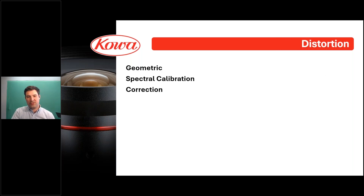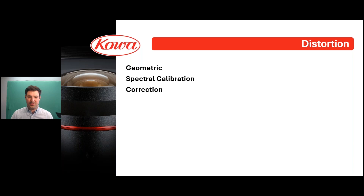There are several types of lens distortion commonly experienced that can affect hyperspectral or multispectral imaging. Geometric distortion, especially at the edges of an image, can alter the true shape of imaged objects. For example, if you take an image of a checkerboard, the squares would be sharp in the middle but curved or bowed at the edges — think of a fisheye effect with intentional distortion. Finding a lens with low distortion is very important.